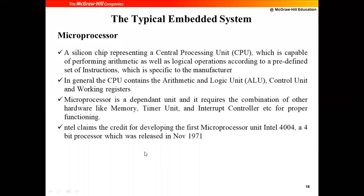A microprocessor is a dependent unit. Why? In a microprocessor, we have only the ALU, Control Unit, and working registers. These alone are not sufficient to make a system work. I require a program, which must be stored in memory — you need buses to fetch it, then execute it in the microprocessor, and send results to input/output ports. All this must be interfaced externally. A microprocessor requires a combination of external hardware like memory, timer units, interrupt controllers, etc., for proper functioning.